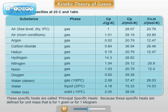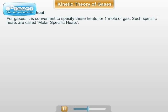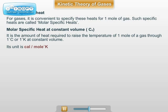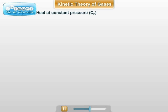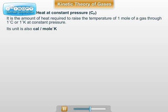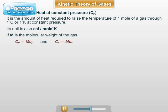These specific heats are called principal specific heats. For gases, it is convenient to specify these heats for one mole of gas; such specific heats are called molar specific heats. Molar specific heat at constant volume is the amount of heat required to raise the temperature of one mole of gas through 1 degree Celsius or 1 degree Kelvin at constant volume. Molar specific heat at constant pressure is similarly defined at constant pressure. If M is the molecular weight of the gas, then Cp equals M times cp and Cv equals M times cv.